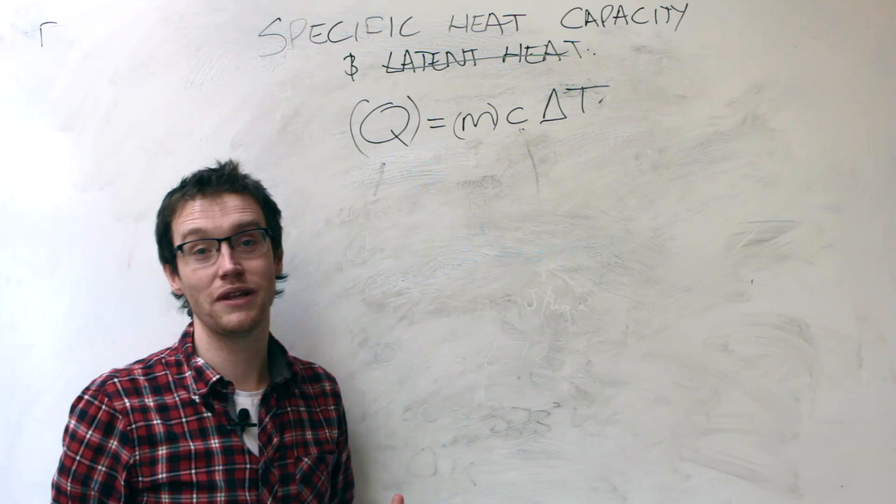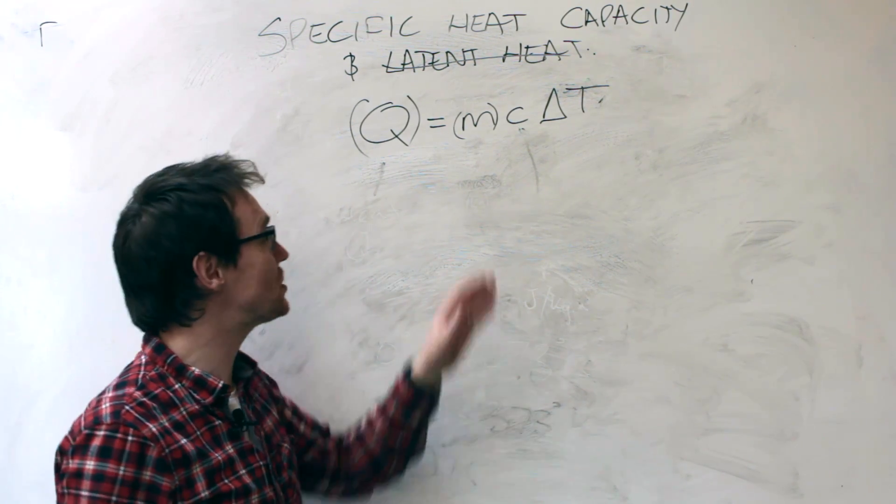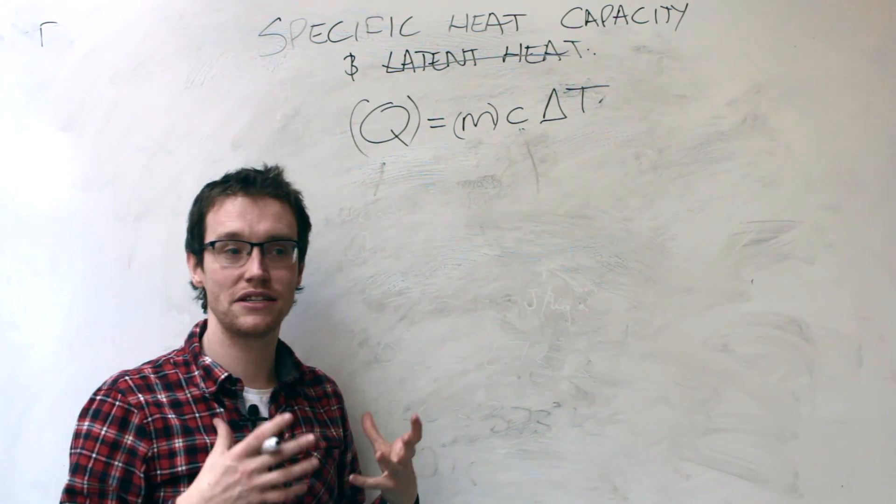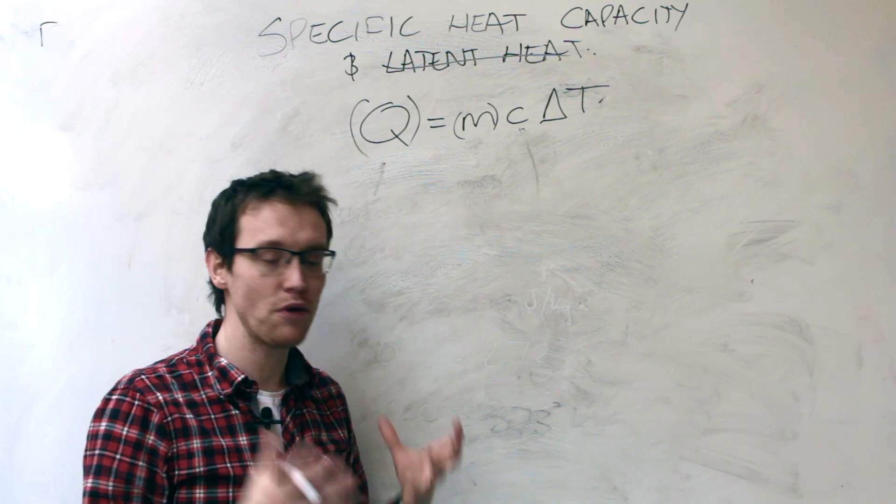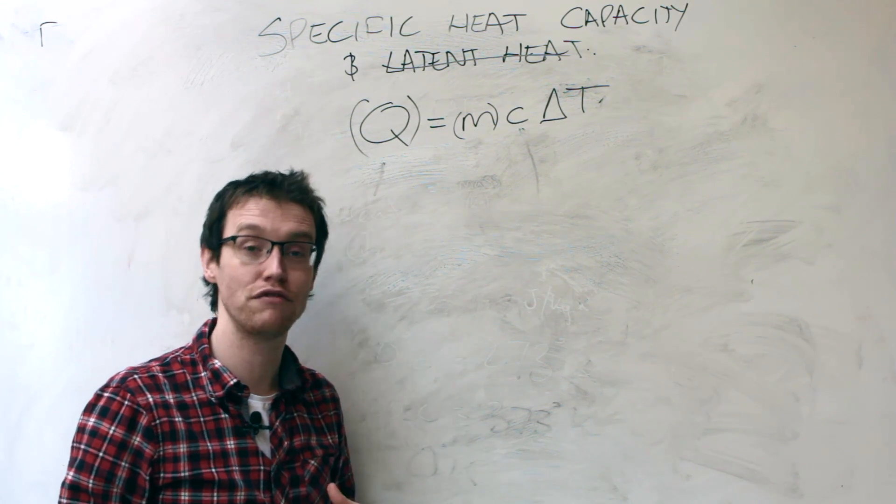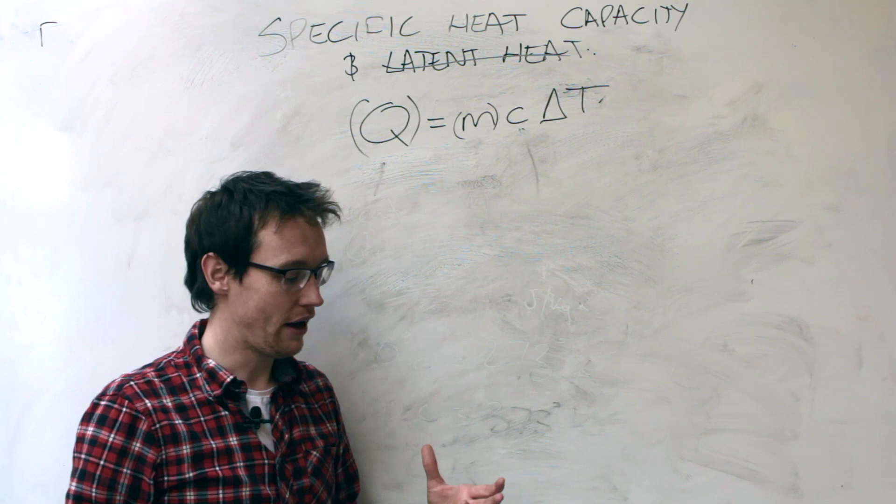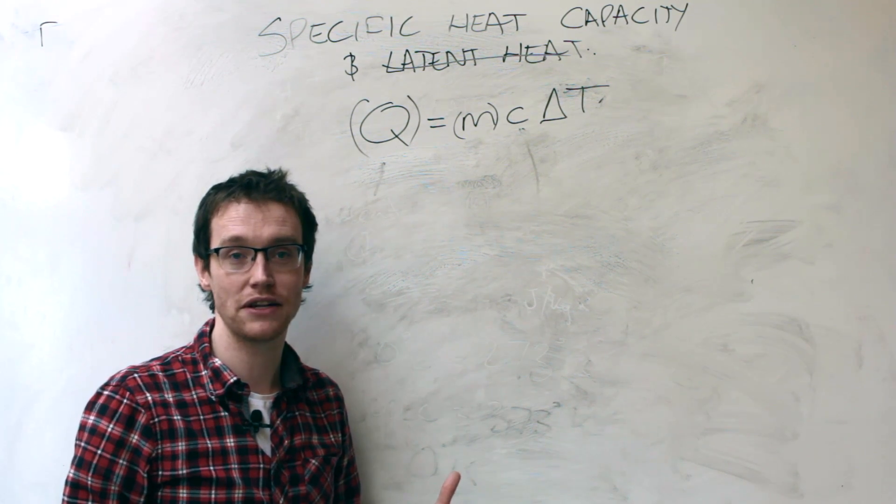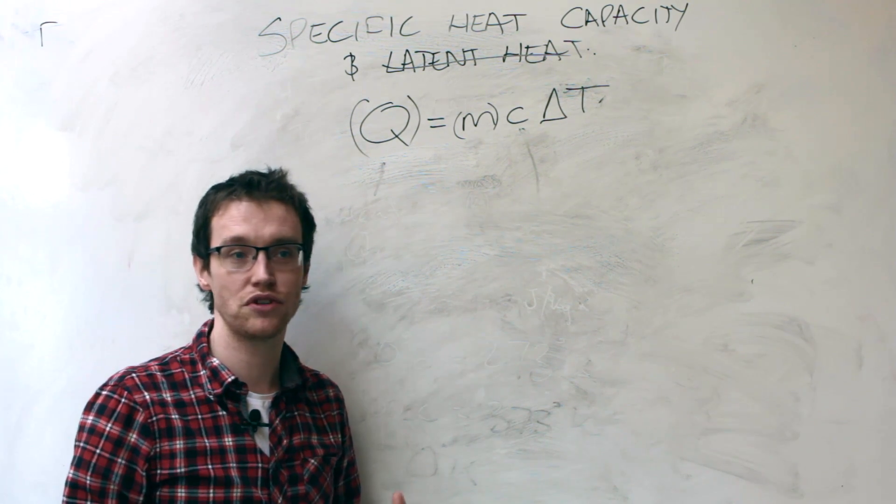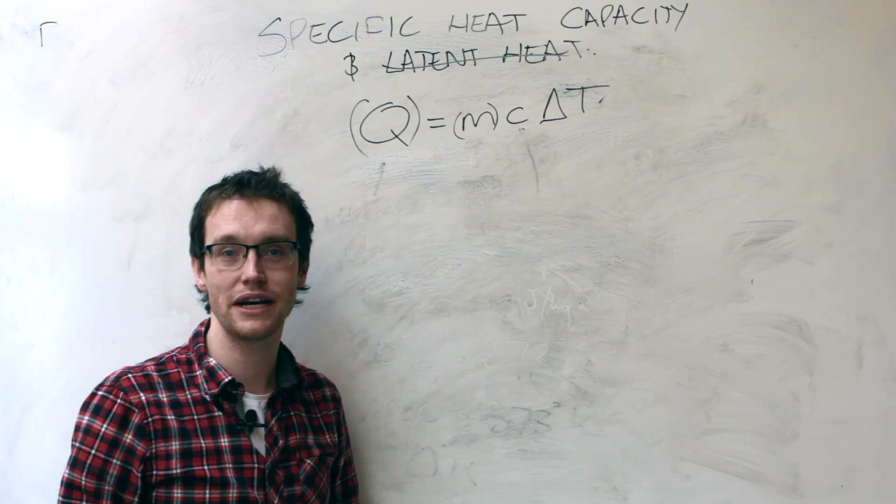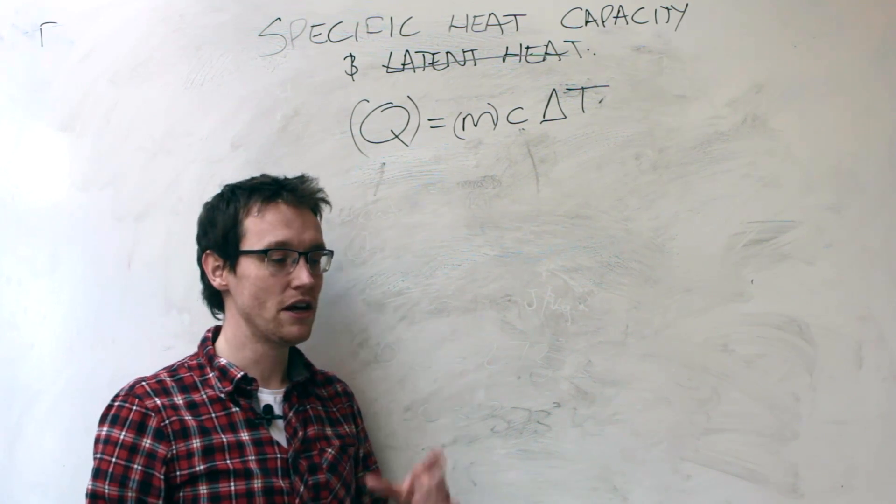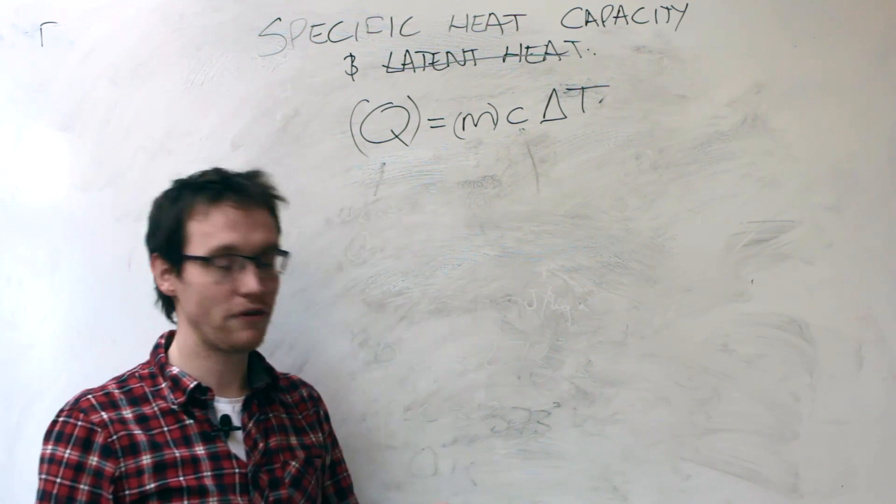Okay, so we've got our formula now for specific heat capacity. We understand that specific heat is a measure of how much energy that material can store, and therefore how long it takes to heat up. Water takes quite a long time to boil, so it's got a high specific heat capacity. Steel, you heat it with a blowtorch, it's red hot within a few seconds - lower specific heat capacity. Right, so we've got a situation here where we've got a cube of gold.